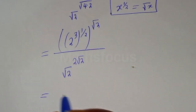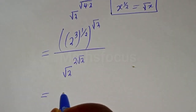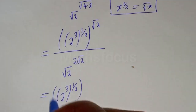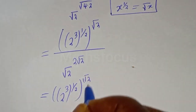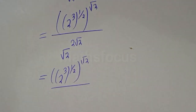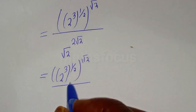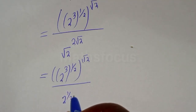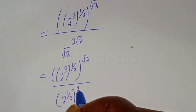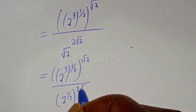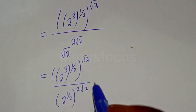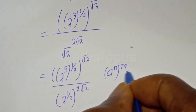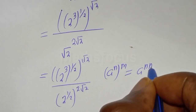And this is equal to 2 raised to power 3, to the power of 1 over 2, to the power of square root of 2, divided by 2 raised to power 3, to the power of 1 over 2, to the power of 1 over 2, to the power of 2 square root of 2. Take note that if you have a raised to power n, to the power of m, this is equal to a raised to power n times m.